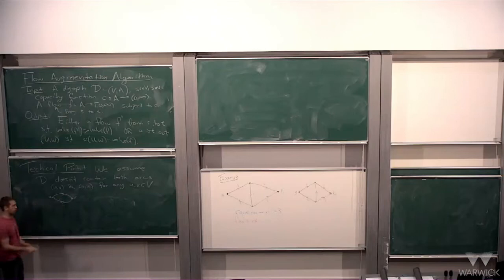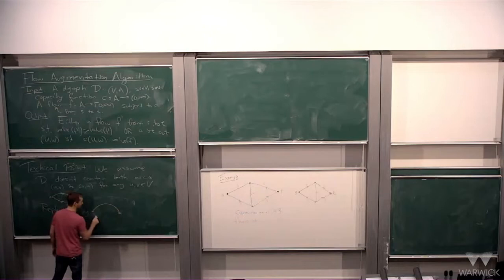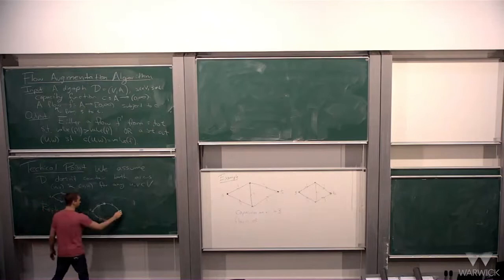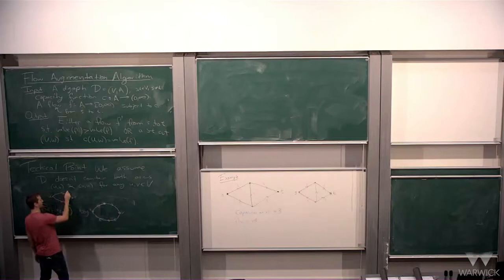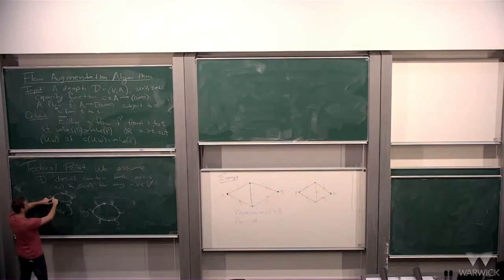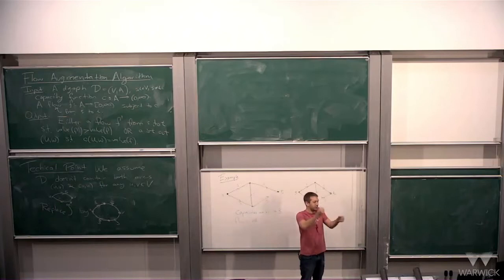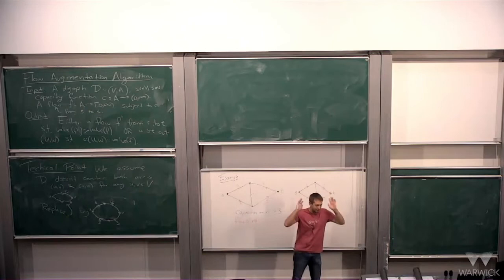If you're given a digraph that contains both directions between two vertices, you can always replace them by inserting an extra vertex in between. If this arc had capacity 5, you make both new arcs capacity 5. If the other had capacity 3, you make both capacity 3. This eliminates bidirectional arcs and doesn't change the max flow at all — it's like a pipe with a junction in the middle.